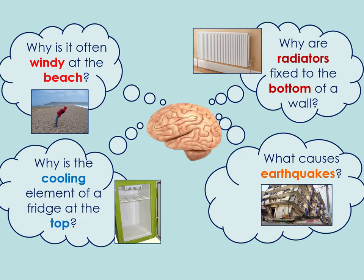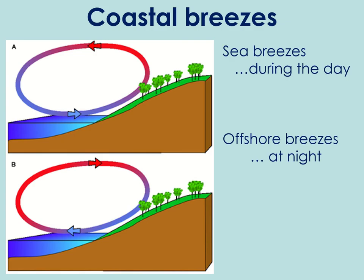I mentioned we need to be able to reference everyday phenomena. The most common ones they would ask you about in an exam are radiators and fridges. But just in terms of general knowledge, this is also the reason why it's windy at the beach and a cause of earthquakes. In terms of coastal breezes, during the daytime you often get sea breezes. This is because when the sun is shining, the land heats up a lot more than the sea.